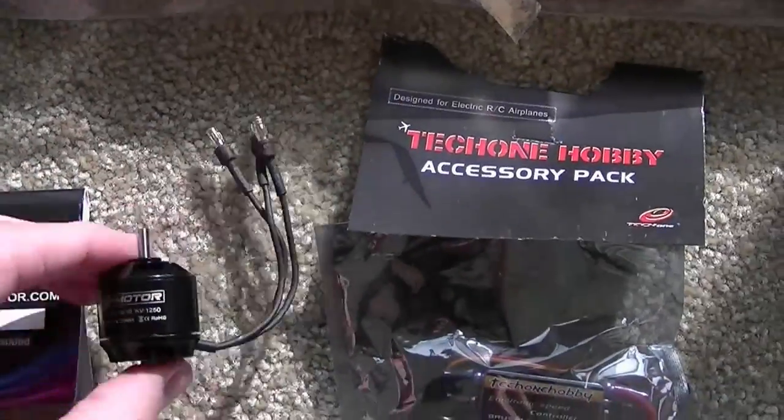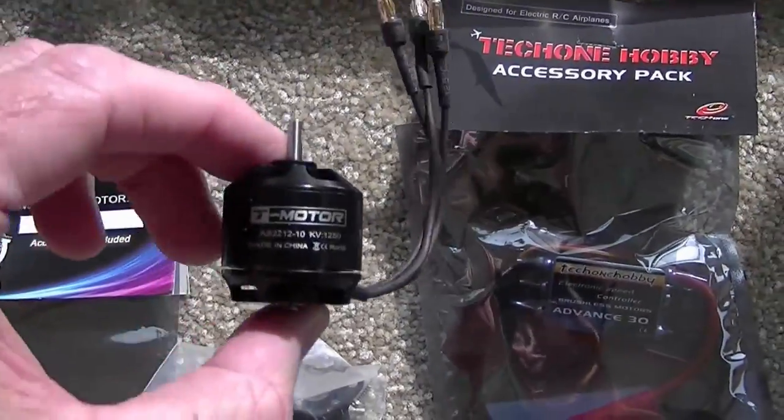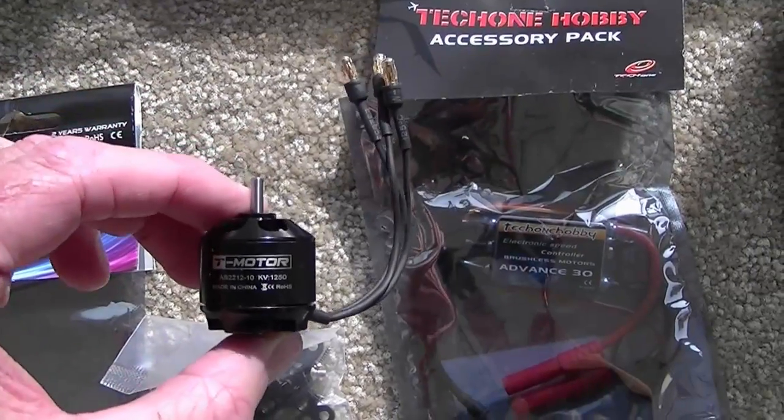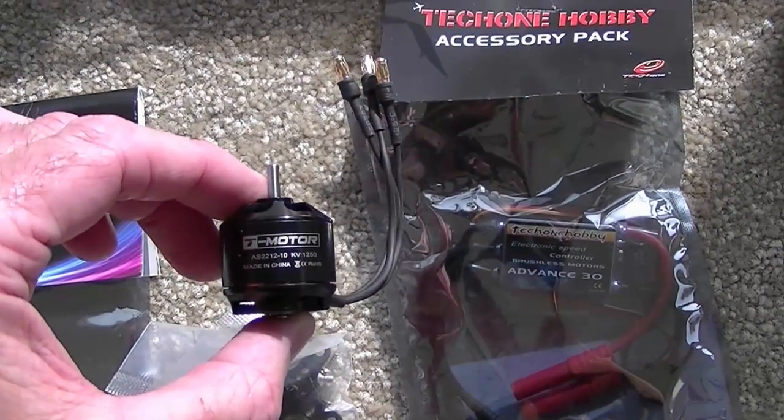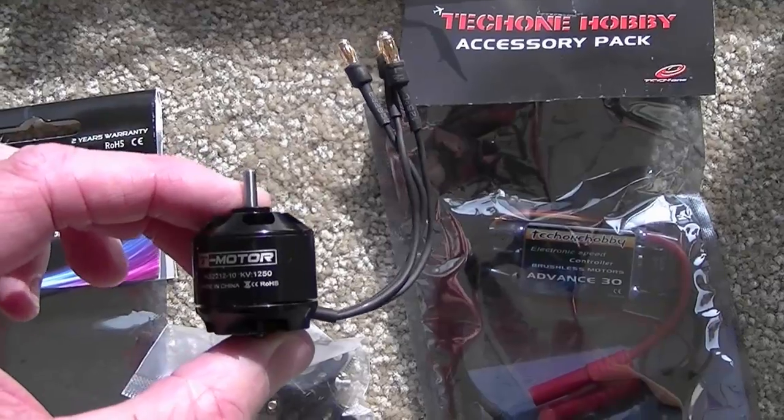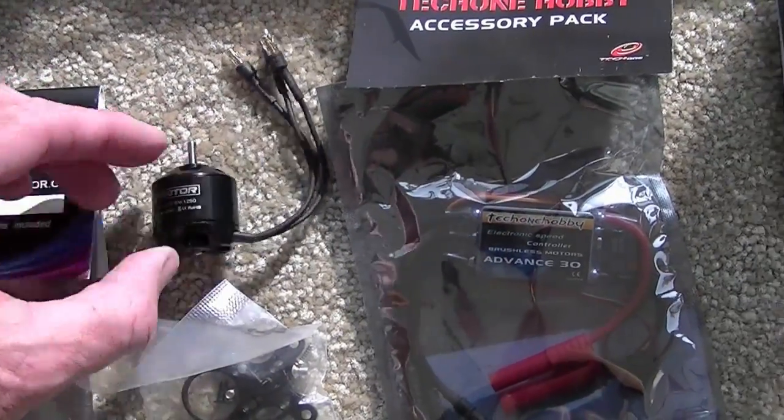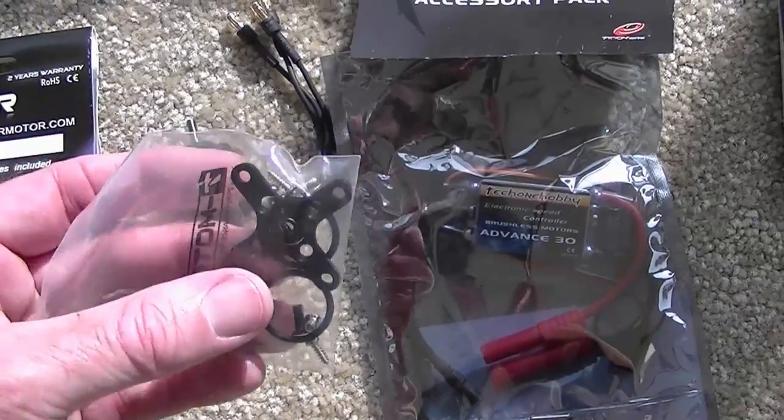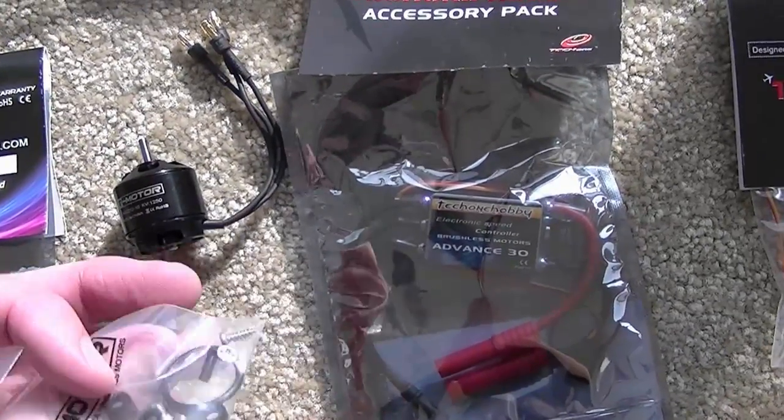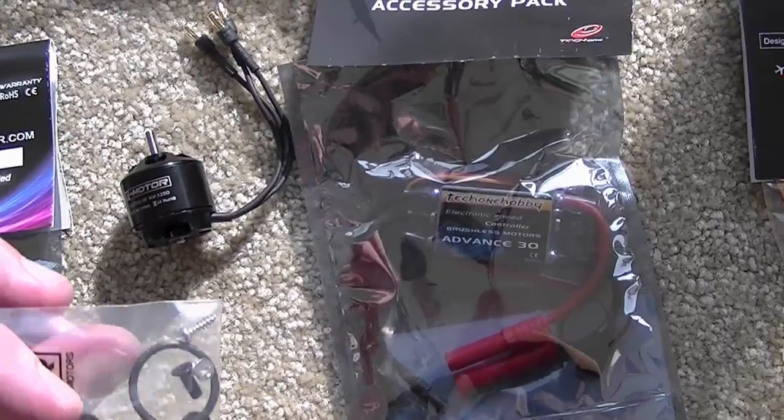Here's the motor. The motor looks like an AS2212-10 and the KV is 1250. It comes with a motor mount and prop saver with bands.